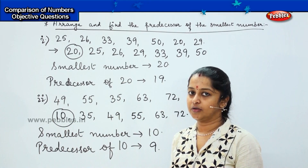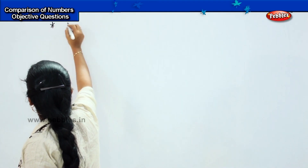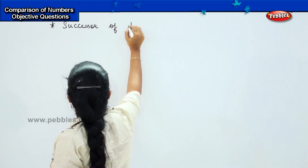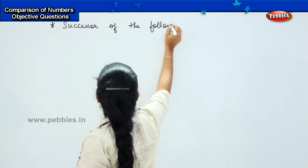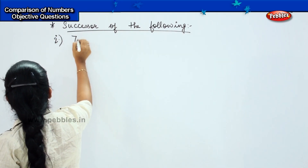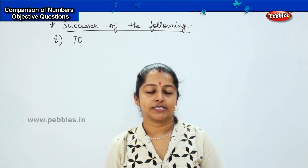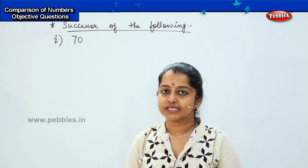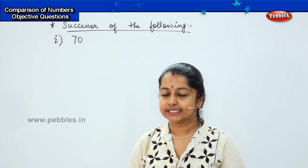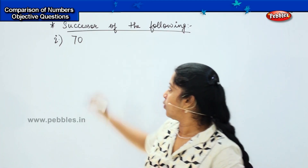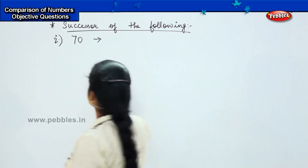Shall we do some more? The next question is: you need to find the successor of the following. Your first question is: find the successor of 70. What do you mean by successor? Successor means a number which comes after the given number. Predecessor was the number before, and successor is the number after the given number. My given number is 70. What will come after 70? Excellent — it is 71.